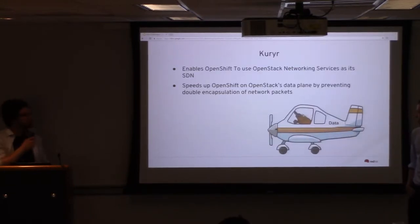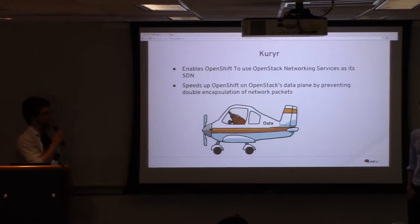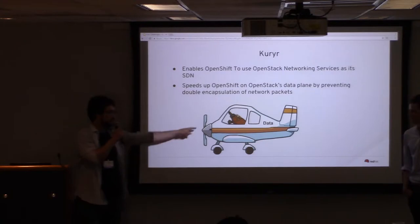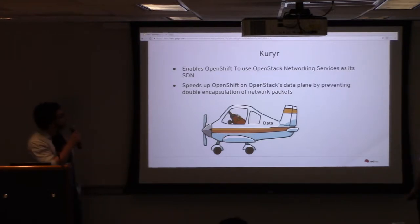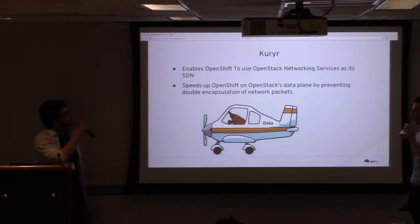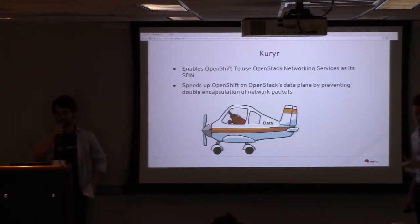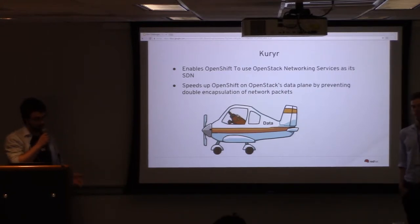Now we're going to get into the sub-project within OpenShift and OpenStack that both of our projects were related to, and that is Kuryr. The most important part of this slide is the Kuryr platypus — unofficially named Carlton. Basically, what Kuryr does is enable OpenShift to use the networking packages and services already in OpenStack in place of its own software-defined network.